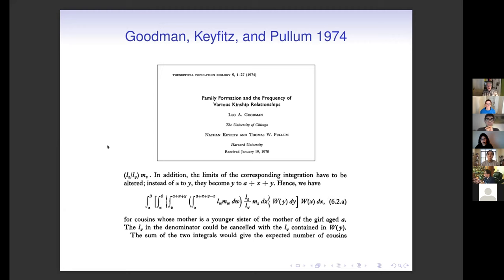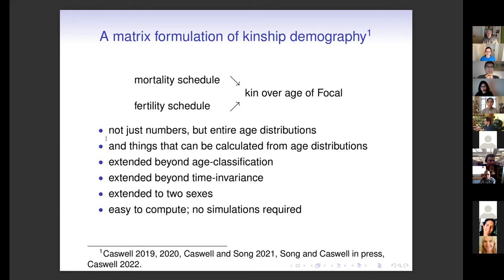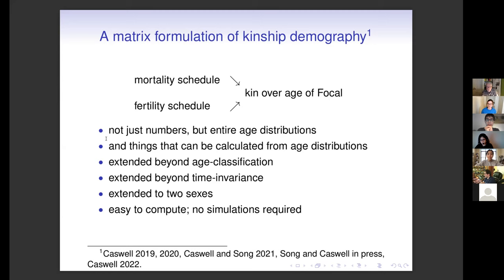The expression on this slide is for cousins whose mother is the younger sister of the mother of a girl aged a. Even when I was working with Nathan Keyfitz on the third edition of his book, the chapter in which he went through this was very hard to follow. The ingredients in the Goodman–Keyfitz–Pullum approach were a mortality schedule and a fertility schedule. What I wanted was to get not just the numbers but the age distributions, and things that could be calculated from age distributions.